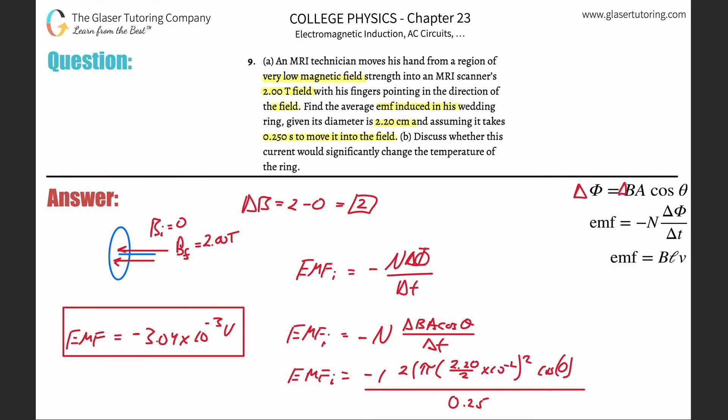The magnitude—what they're asking here is find the average EMF induced. Yeah, they're basically asking for the magnitude more or less, so don't worry about the sign. It just gives us a certain direction, but the magnitude is what is important. And that takes care of letter A. And then letter B says discuss whether this current would significantly change the temperature of the ring.